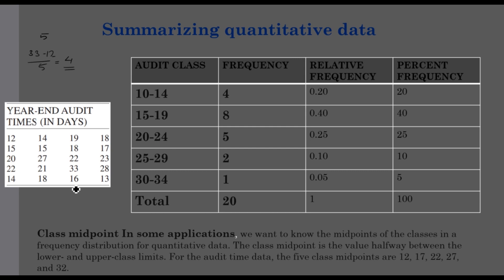Our class intervals will be 10 to 14, 15 to 19, and so on. When we get to the frequency: 10 is not in class, 11 is not in class, 12 appears 1 time, then 13, then 14 appears 2 times, and 15 is not in the first class. So we get frequency 4 for the first class interval 10 to 14.